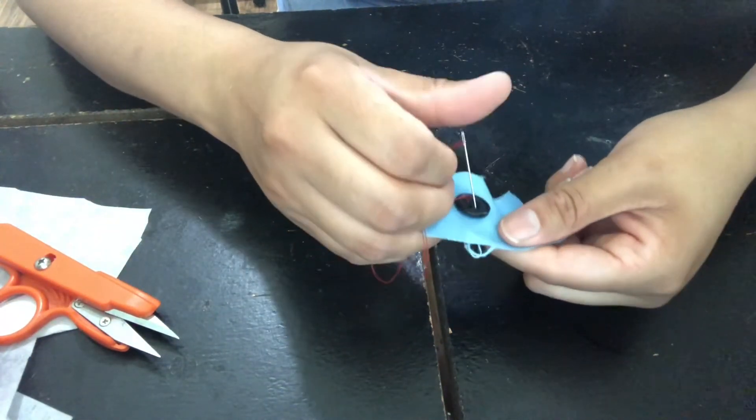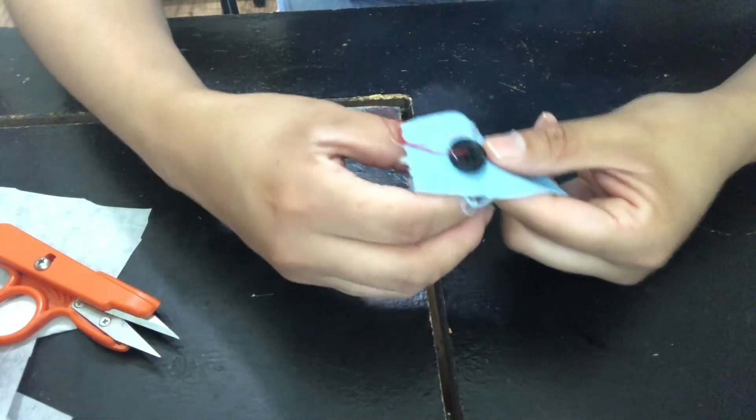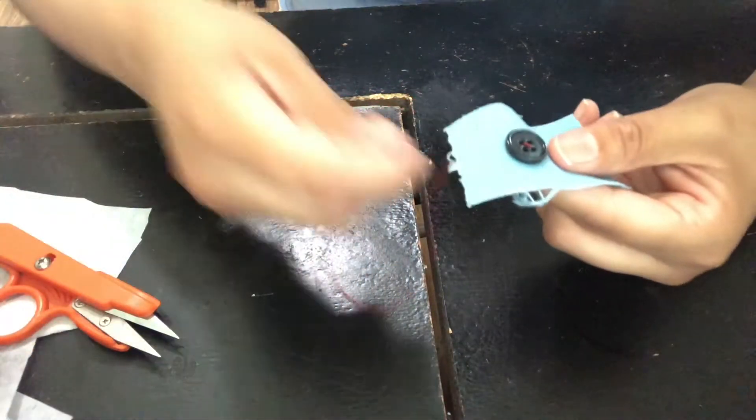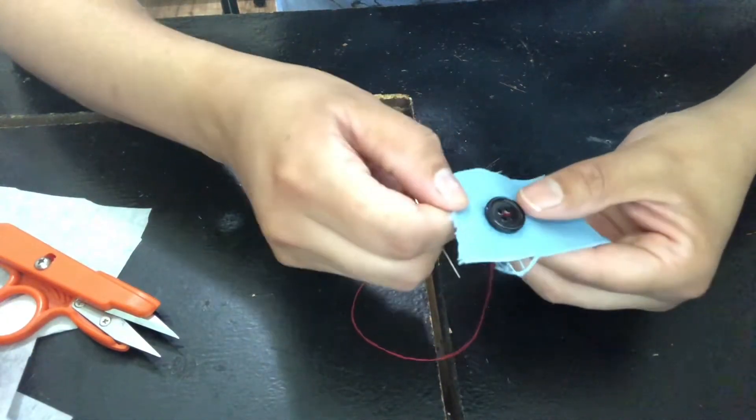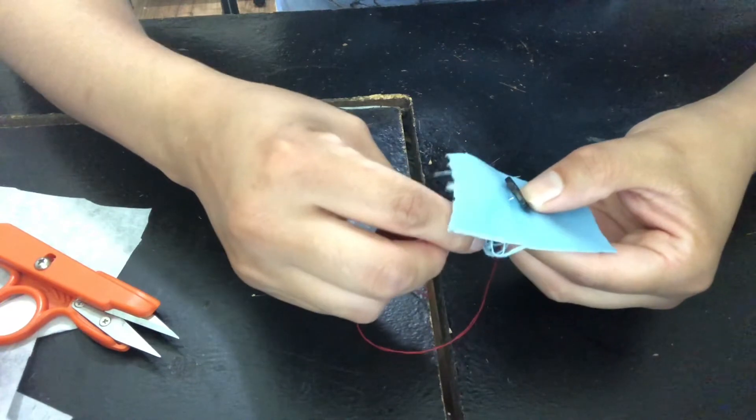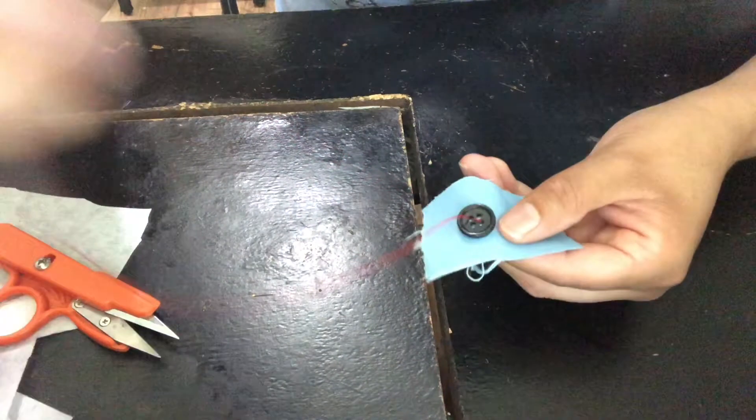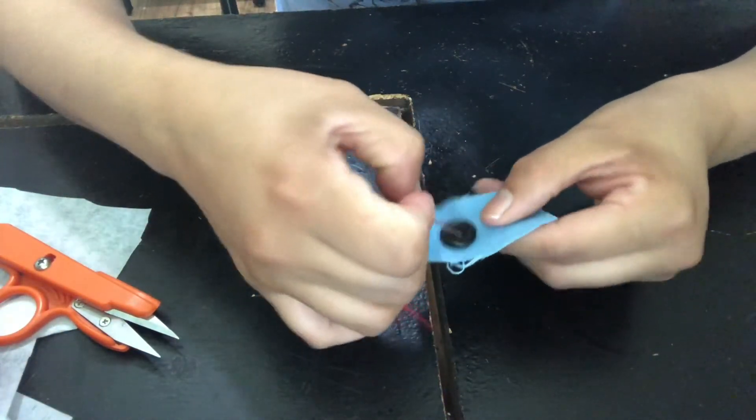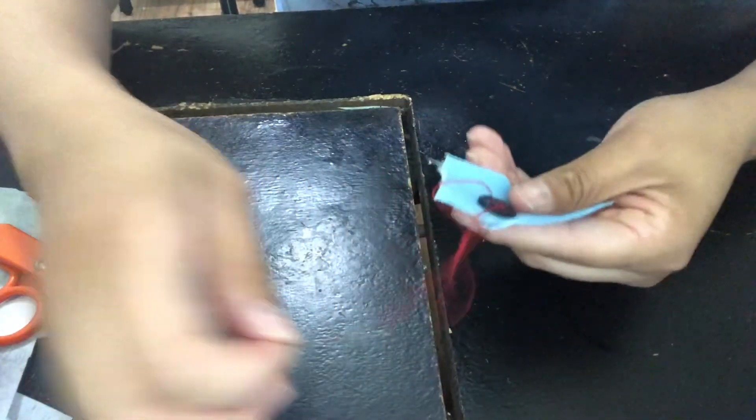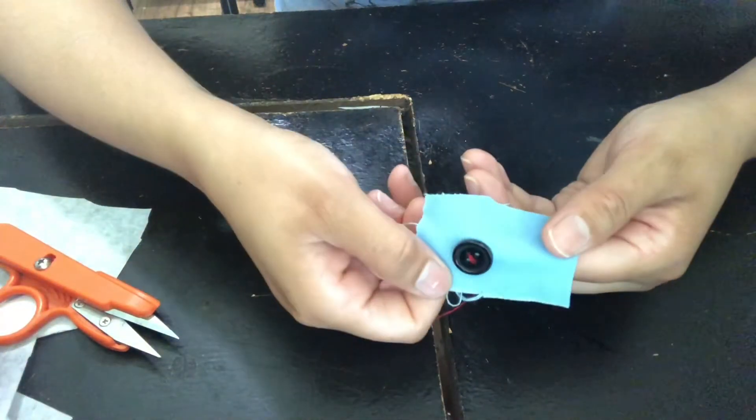Then you want to put it on the opposite side like that. Then you're going to come in and come through the same side that you started with. You can do this however many times you want to. I usually do it two times on each side, so there's the second.